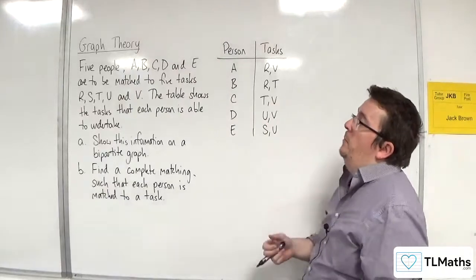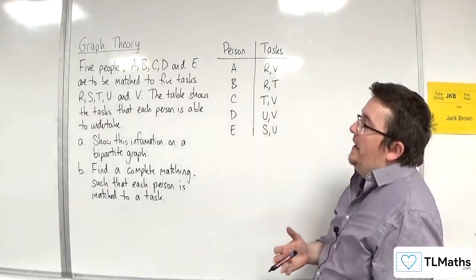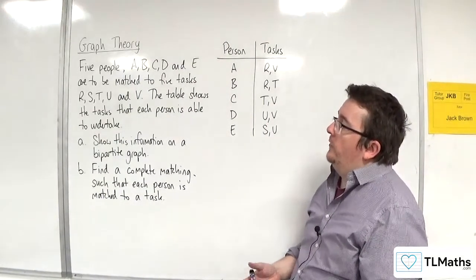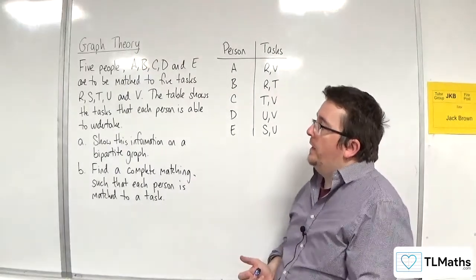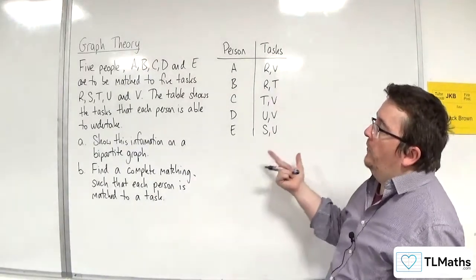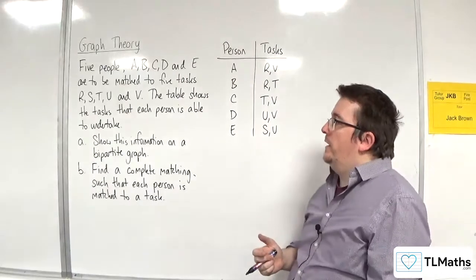In this video, we've got five people, A, B, C, D, and E, to be matched to five tasks, R, S, T, U, and V. The table shows the tasks that each person is able to undertake.